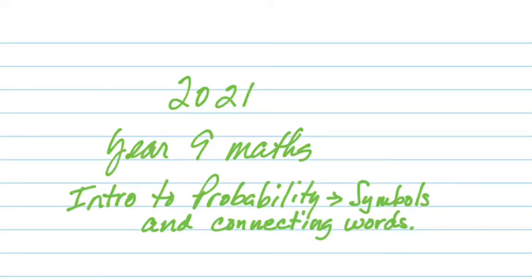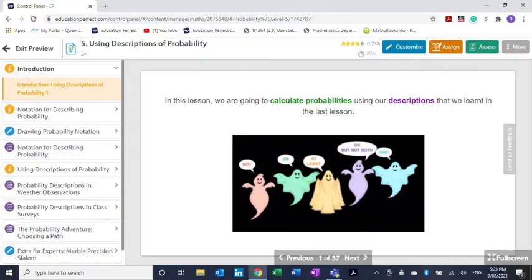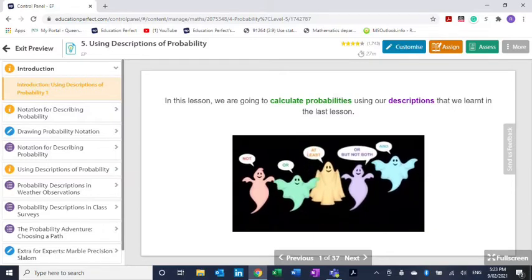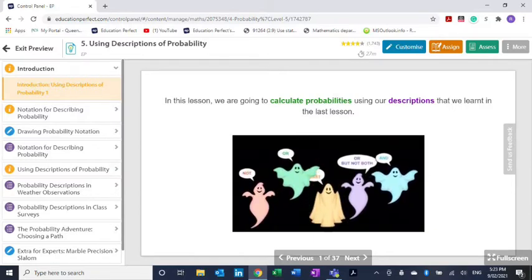Tonight we're going to look at an introduction to probability symbols and connecting words. Sometimes you're going to be looking at the probability of more than one thing happening at the same time, and there will be lots of examples of that. I'm going to use Education Perfect because they have such good illustrations. It should go pretty fast, so don't panic.